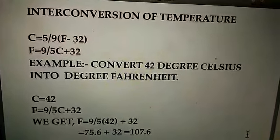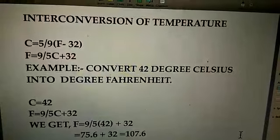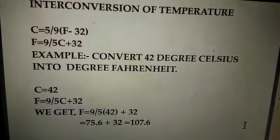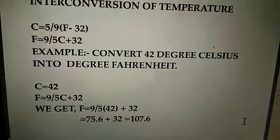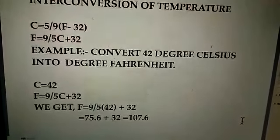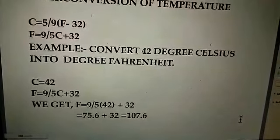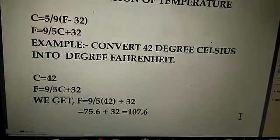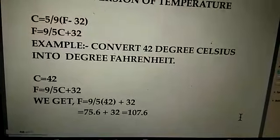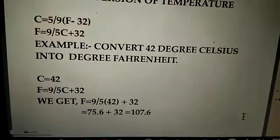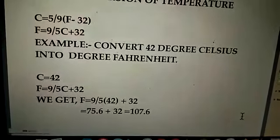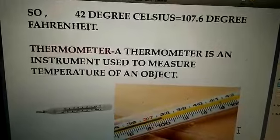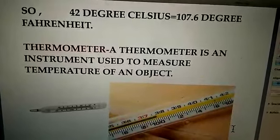Let's see, for example, convert 42 degrees Celsius into degree Fahrenheit. First of all, we will write C, that is the Celsius, is equal to 42 degrees. F, that is Fahrenheit, is what we have to find out. The formula to find out F is 9 divided by 5 C plus 32. Now we'll put the numbers in the formula. We will get F is equal to 9 by 5 in bracket 42 plus 32. After calculation, we will find out 75.6 plus 32 is equal to 107.6. So the answer is 42 degree Celsius is equal to 107.6 degree Fahrenheit.